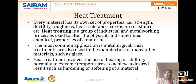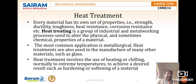Every metal has its set of properties. If you take any material — brass, copper, steel, silver — any material you take, it has its own properties like strength, ductility, toughness, heat resistance, corrosion resistance, and so on. Heat treating is a group of industrial or metalworking processes used to alter the physical and sometimes chemical properties of a material, to improve or change those properties.